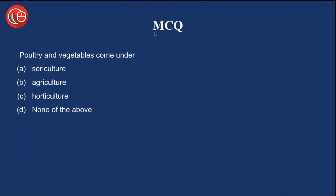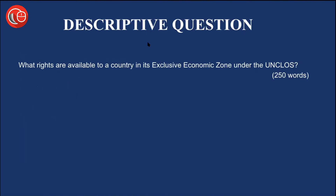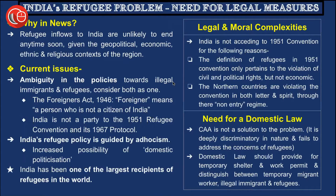Let's see the multiple choice question from yesterday's discussion: Poultry and vegetables come under — your options are sericulture, agriculture, horticulture, or none of the above. You can write your answer in the comment section below. The descriptive question of the day is: What rights are available to a country in its exclusive economic zone under UNCLOS, the United Nations Convention on the Law of the Sea? Now let's start our discussion with the first article, which talks about India's refugee problem and the need for legal measures.